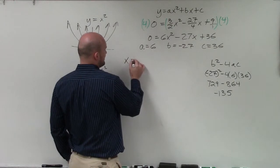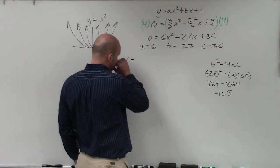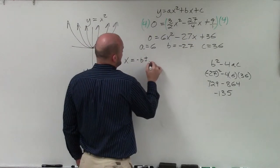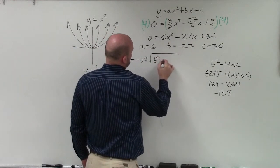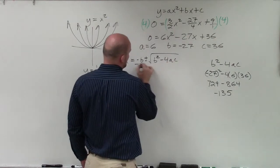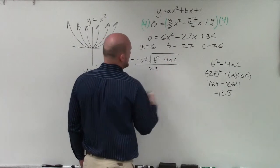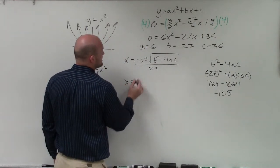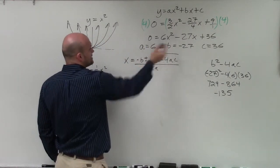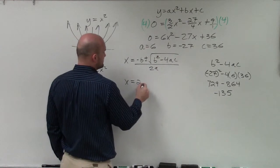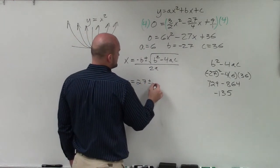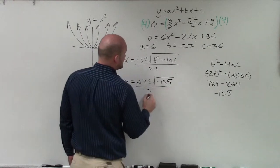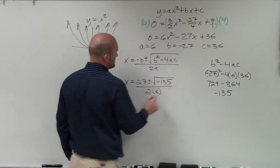So I'm going to have to finish off the quadratic formula. So x equals opposite of b plus or minus the square root of b squared minus 4 times a times c all over 2a. Now, I know the discriminant is already negative 135, so I'm going to plug that in. And b is opposite of 27, which would be positive 27, plus or minus the square root of negative 135 divided by 2 times a, which is 6.